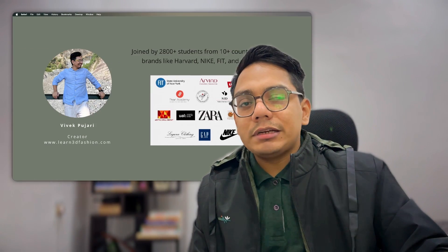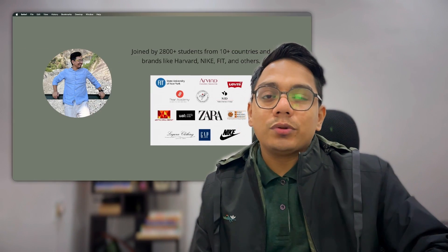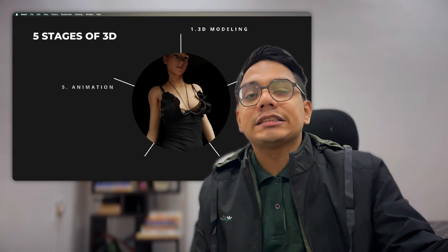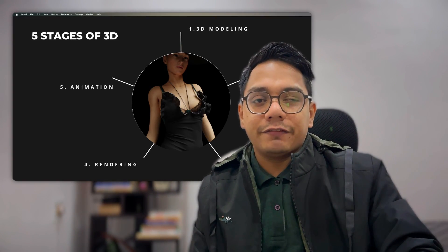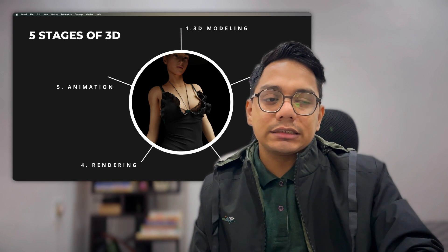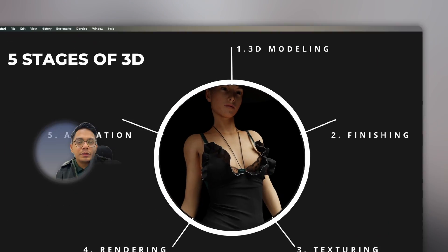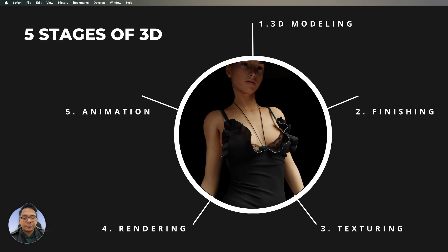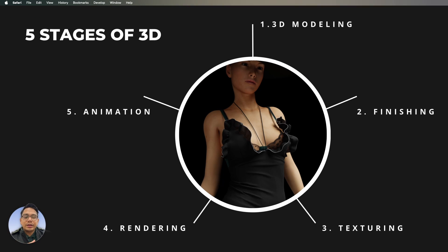Let's quickly jump into the five different stages of 3D fashion and how those stages can help you structure your learning. The five stages are: 3D modeling, finishing, texturing, rendering, and animation.